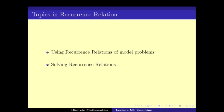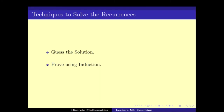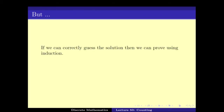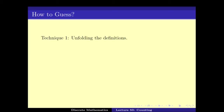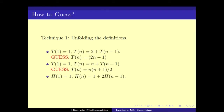We have seen quite a few examples of how to model problems using recurrence relations, and we also saw various techniques for solving them. The most obvious technique was to first guess the solution and then prove by induction. If one can guess it correctly, then that is it. But guessing the solution can be a tricky problem. One technique we looked at was unfolding the definitions, and we saw how this can be used to solve or guess the recurrence relations.